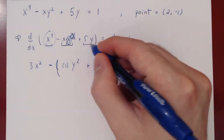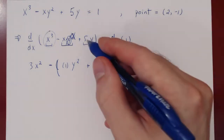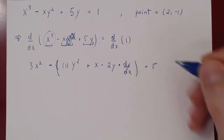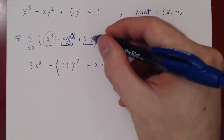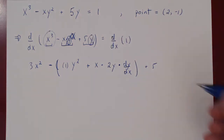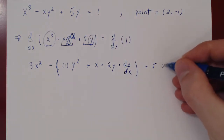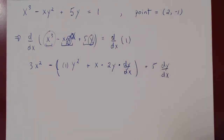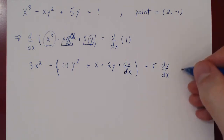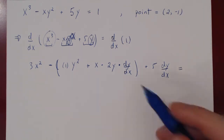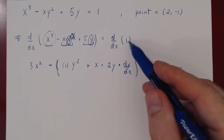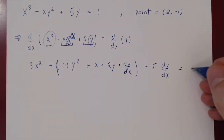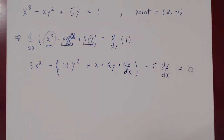Plus the derivative of 5y: 5 is a constant multiple, so it stays, times the derivative of y with respect to x, which is dy/dx. That equals the derivative of 1 with respect to x. Since 1 is a constant, its derivative is 0.